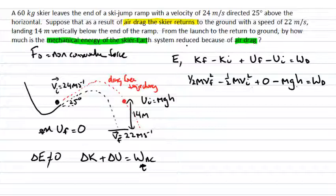So at this point we can put some numbers into this. I have a half is common between these two terms. My mass is also common which is 60, outside of my final velocity was 22 squared minus my initial velocity that was 24 squared, and minus my mass which is 60 times 9.8 times 14. That's equal to the work which is done by drag.